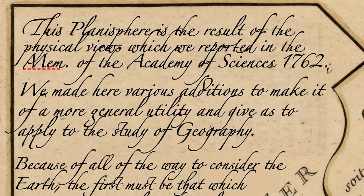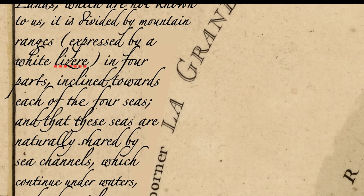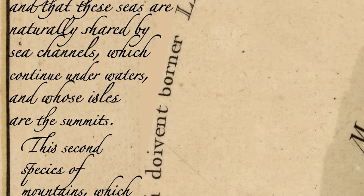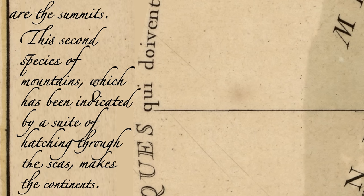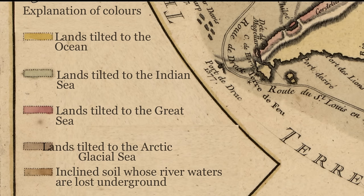And give it to apply to the study of geography. Because of all of the ways to consider the earth, the first must be that which examines its natural or physical state. We see in this plan that independent of the Antarctic lands, which are not known to us, it is divided by mountain ranges expressed by a white lazare in four parts tilted towards each of the four seas. These seas are naturally shared by sea channels which continue under waters, whose isles are the summits. This plan still gives the methodical division of rivers which go to each part of these seas from mountain ranges, including the most elevated land — here called platforms or plateaus.